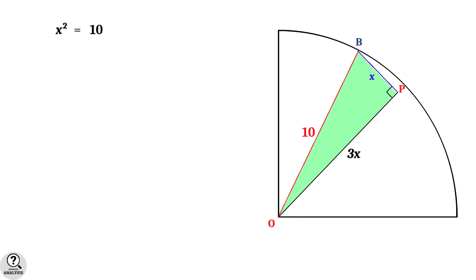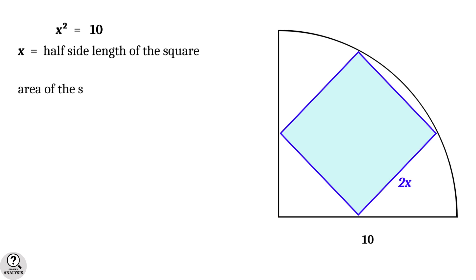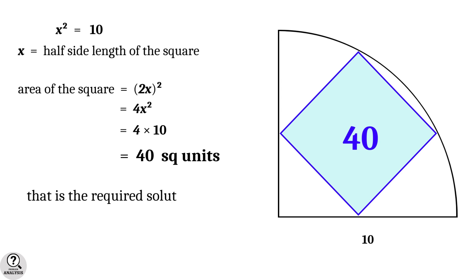Now what is x actually? It's the half side length of the square. Therefore, area of the square will be 2x squared, which equals 4x squared. But we know that x squared equals 10. Thus, area equals 4 times 10 equals 40 square units. And that is the solution we are looking for.